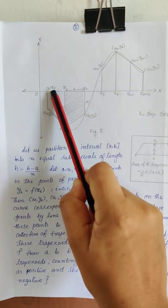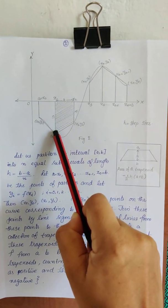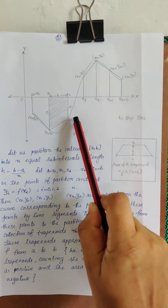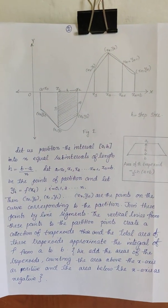And y_i's are f of x_i. That is, if here you have x0, this is y0. This is x1, this will be y1. If this is x2, this is y2. And these x0, y0, x1, y1, x2, y2, etc. are the points of our curve.